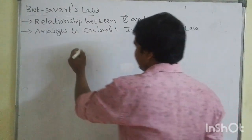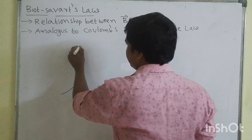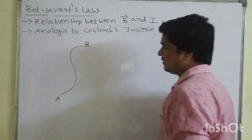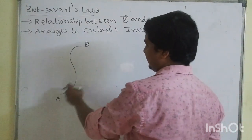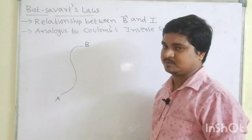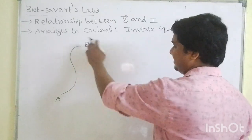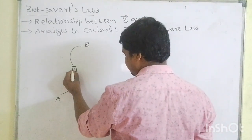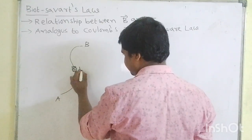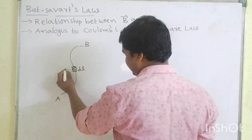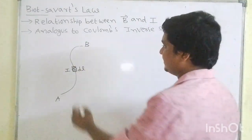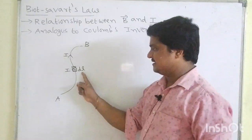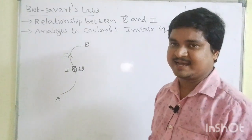Consider a current element — take one element, a current carrying conductor of length AB. Consider a small element of length DL of this conductor. In this DL length, current is split. Through AB, there is a flow of current I. We call IDL the current element.